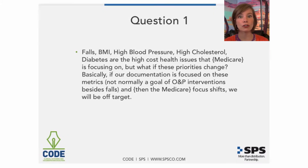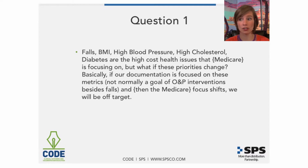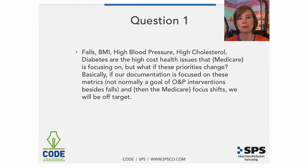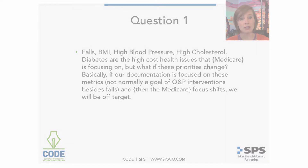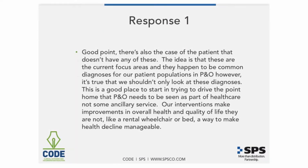Here's the first question. Falls, body mass index, high blood pressure, high cholesterol, and diabetes are all high-cost health issues that Medicare is focusing on — but what if these priorities change? Basically, if our documentation is focused on these metrics, which are not normally a goal of P&O interventions besides falls, and Medicare's focus shifts, we'll be off target. And there's also the case of a patient who maybe doesn't have any of these diagnoses — what do you do then?